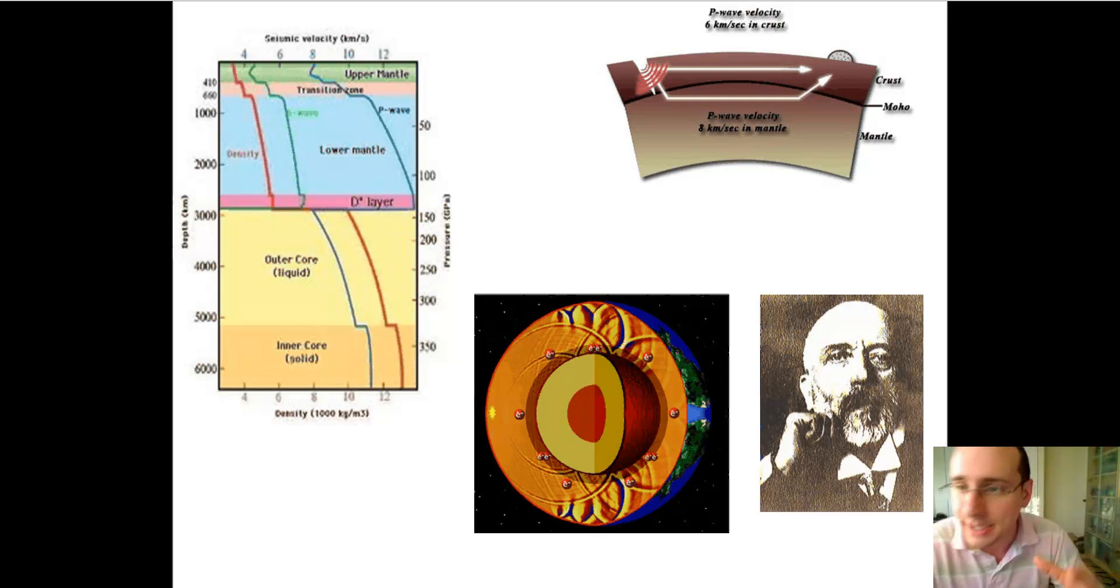And we have confirmation of that, to study of rocks that come through volcanoes to the surface, and we've picked up those rocks from the mantle, and we studied them, and we realize, yes, they are made of materials which are denser than the materials which the crust is made of.